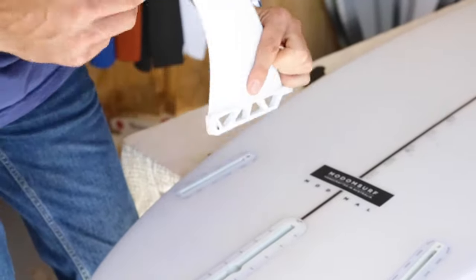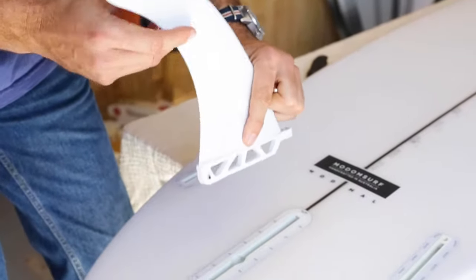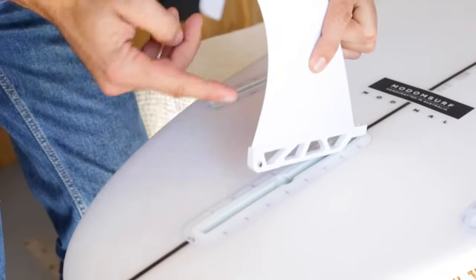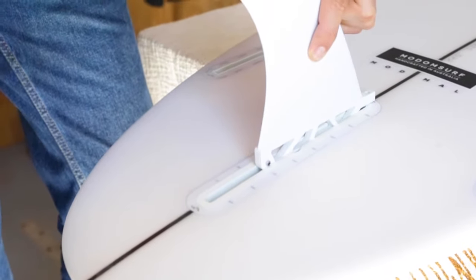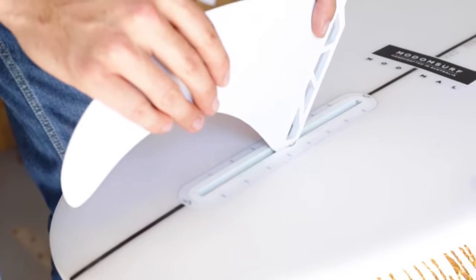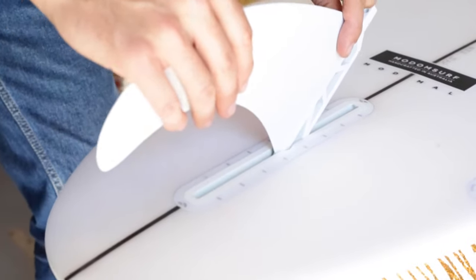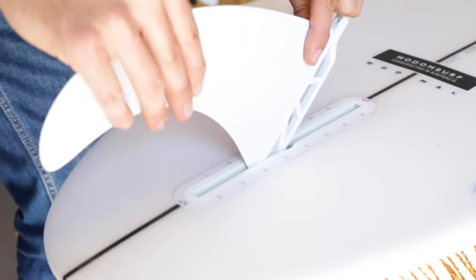You've got your little pin - essentially a little bar that goes through the back of the fin. Keep in mind the rake of the fin goes pointing backwards. You're going to put that in that little gap there. Make sure there's a little rail in there so you can feel that it slides across the rail.